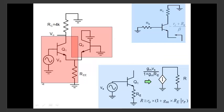This method is less error-prone because you're applying a result you've already derived and know is correct — you're not recalculating it each time. Just as you know 5×3=15 with certainty, you know the resistor looking into the emitter is (Rπ+Rb)/β. It's a known, accurate, correct result. When you apply it, you're not making errors. This is the key advantage of the block-based approach.